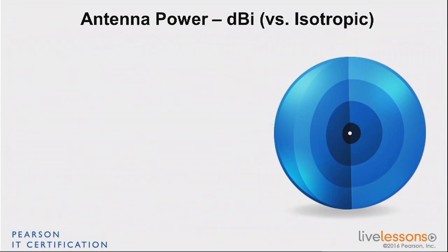That reference is a theoretical, imaginative antenna that we call the isotropic antenna, which you can see on the screen. The isotropic antenna is a theoretical antenna that is one point — one dot — large, and it radiates exactly the same way in all directions in the sphere. That's the isotropic antenna.